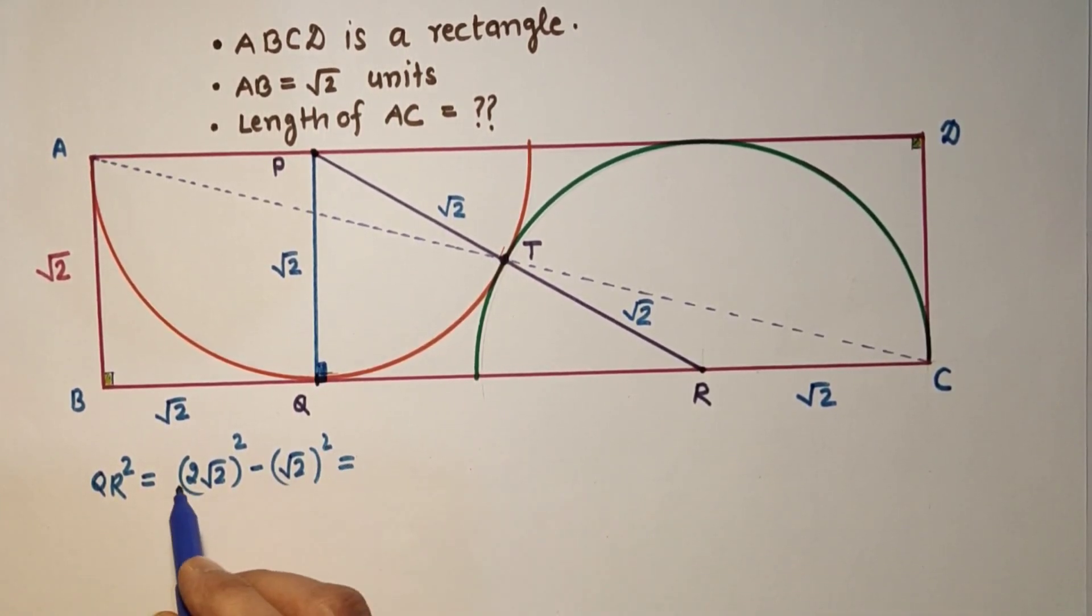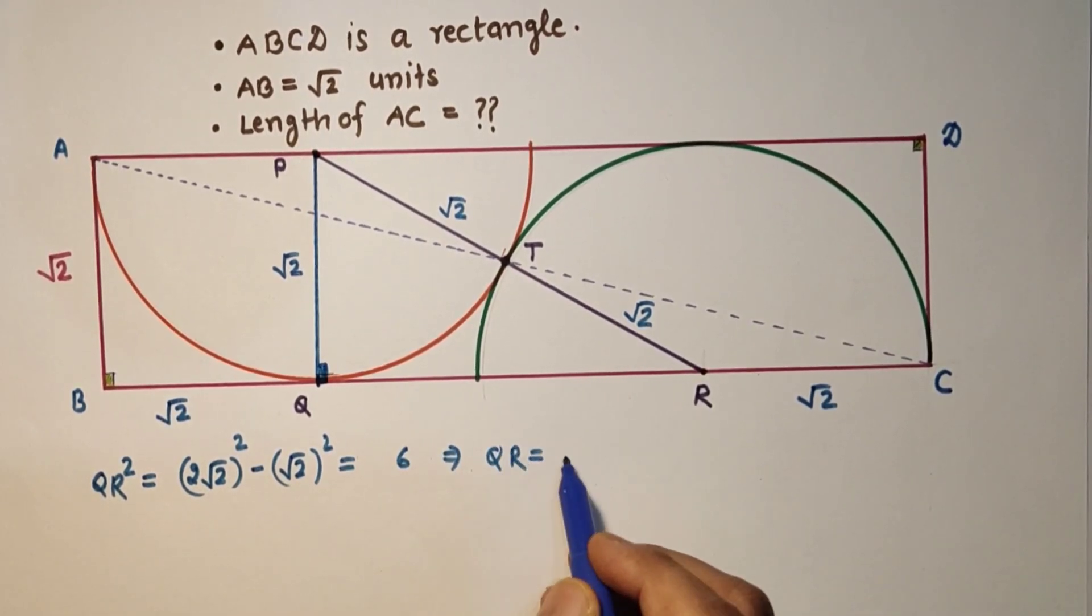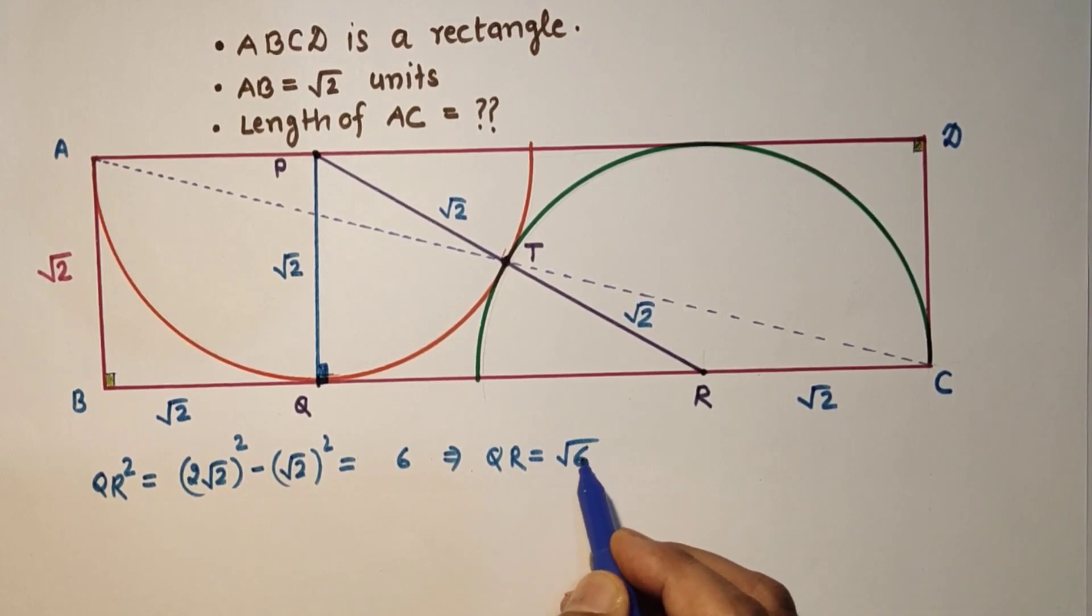That is equal to 8 minus 2 which is 6. Which means QR is equal to root 6 units.